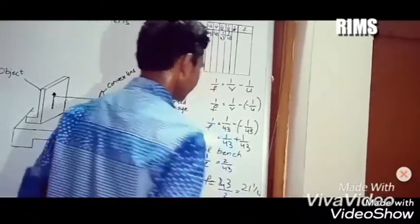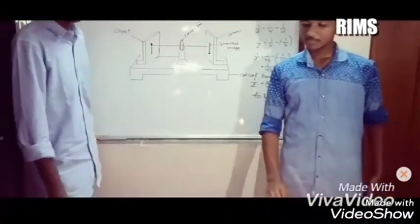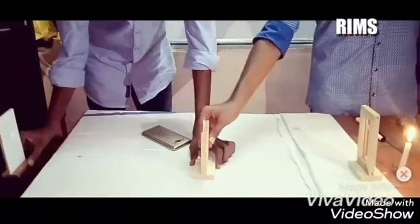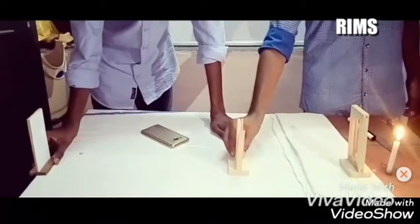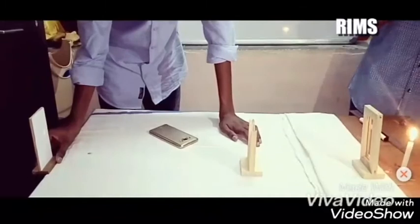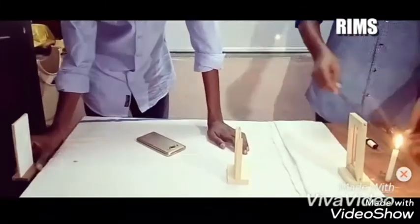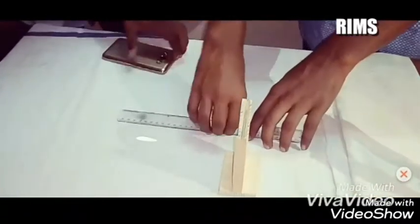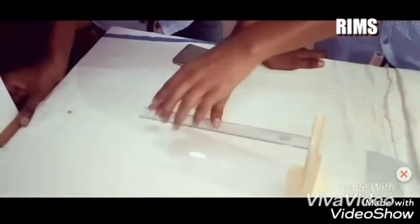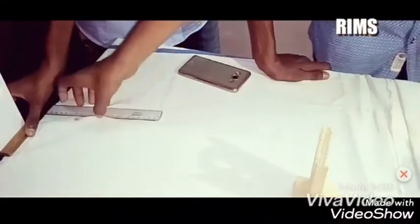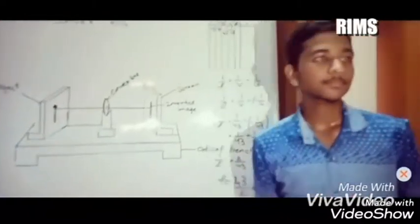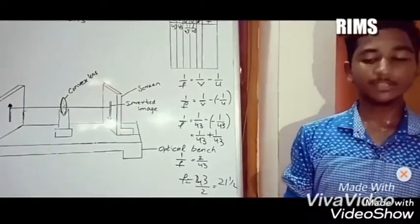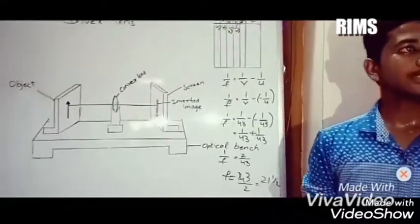We repeat this for 5 to 6 times because to minimize the experimental errors. Now by substituting the U values, this is 1/U value, and this is the V value. Now substituting the values in this formula, we will get the value of f. By taking the average of all values, we could get the correct focal length of the lens. We took 5 to 6 times because to minimize the experimental errors. Thank you.